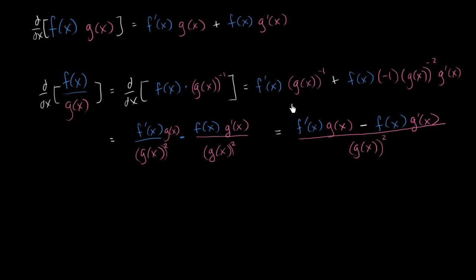So once again, you can always derive this from the product rule and the chain rule. Sometimes remembering the quotient rule might make working through certain problems a bit faster. If you compare the product rule and the quotient rule, the pattern is: the derivative of one function times the other, but instead of adding the derivative of the second function times the first, we subtract it — and all of that is over the second function squared, whatever was in the denominator squared. So when taking the derivative of the function in the denominator, there's a subtraction up top, and everything goes over the second function squared.